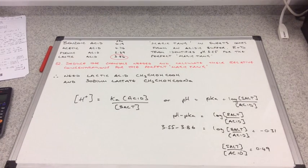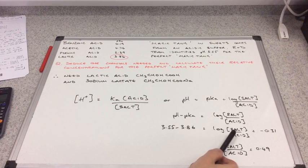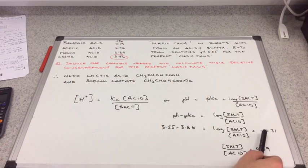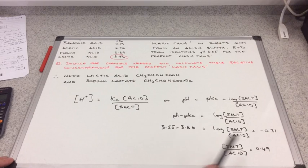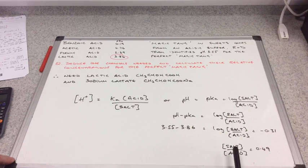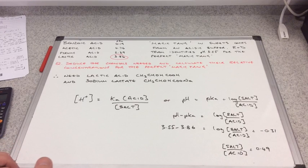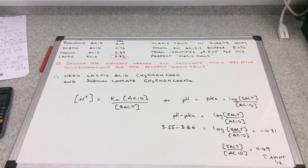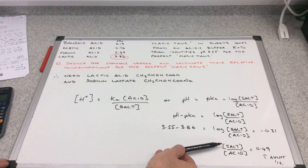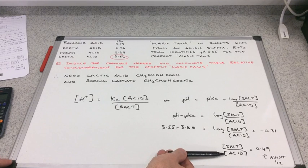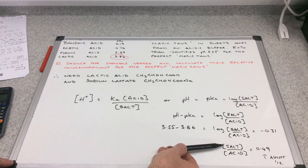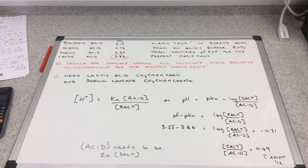We're nearly there. The log of the salt over acid comes out at minus 0.31. If you just hit shift log on that answer, that gives you the salt over acid concentration and that comes out at 0.49. 0.49 is almost a half, so in other words the acid needs to be twice the concentration of the salt.